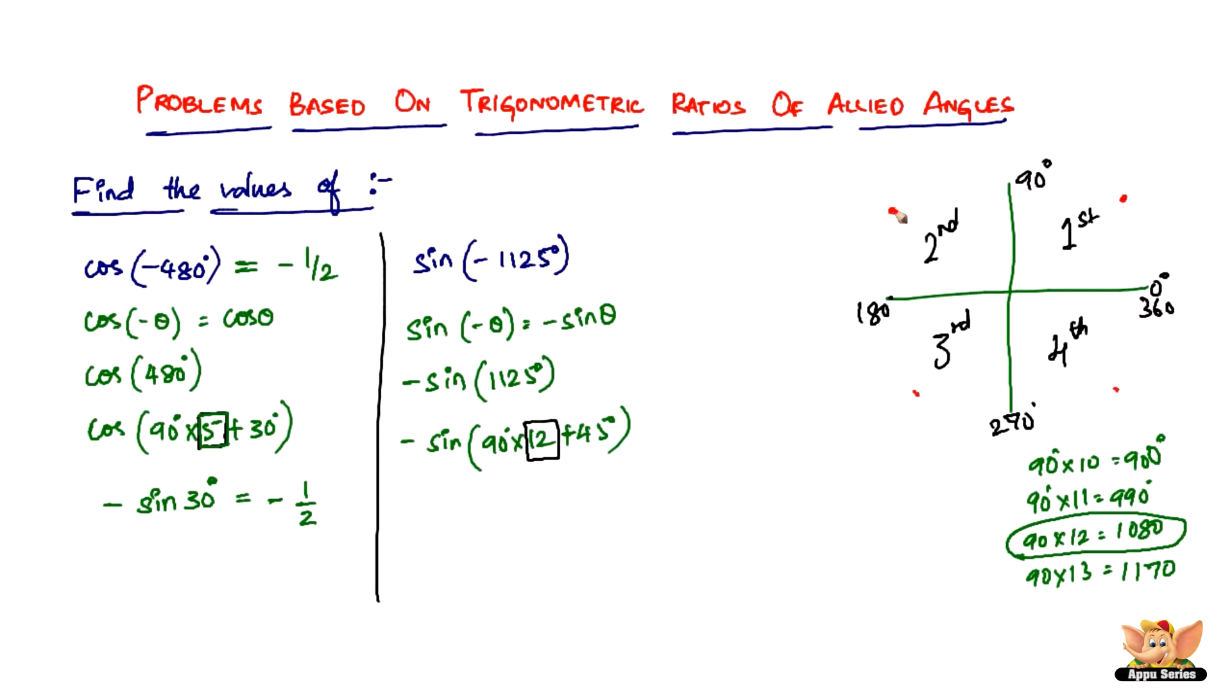Leave the first one and count from here: 1, 2, 3, 4, 5, 6, 7, 8, 9, 10, 11, 12. So 12 ends in the first quadrant, so therefore 1,125 belongs to the first quadrant, and first quadrant all are positive. Sine minus sine is going to remain minus sine because it's positive into negative, it's going to be negative.